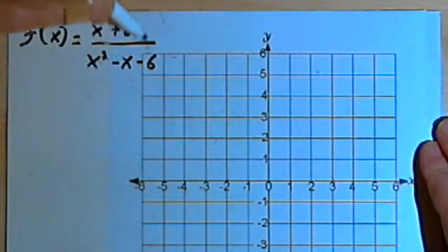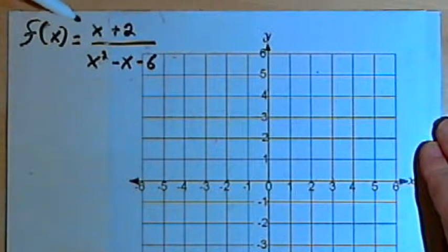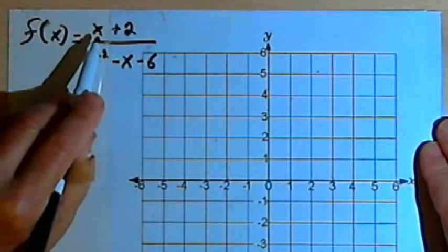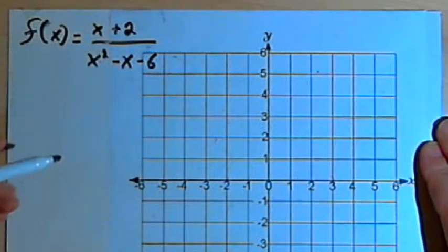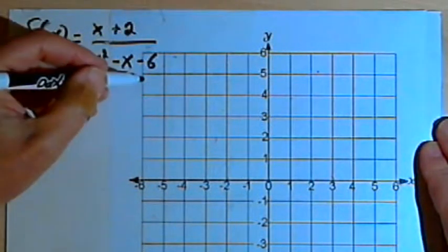Now normally when we deal with a rational function we want to make sure it's factored as much as it can be. The numerator is going to stay the same. That x plus 2 can't be factored anymore. But we can factor the denominator.